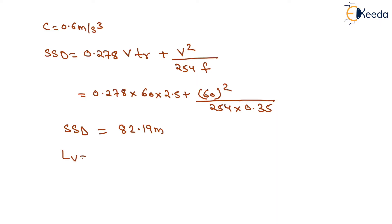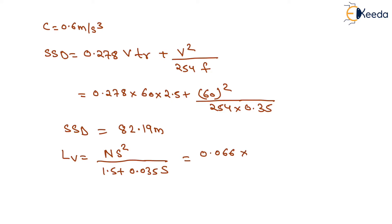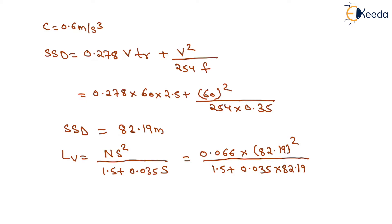Now we calculate the length of valley curve according to the headlight sight distance condition: L equals N × S² divided by (1.5 plus 0.035S). Putting in the values, N equals 0.066 and S equals 82.19 meters: L equals 0.066 × (82.19)² divided by (1.5 plus 0.035 × 82.19). On solving, the length of valley curve equals 101.868 meters as per headlight sight distance.